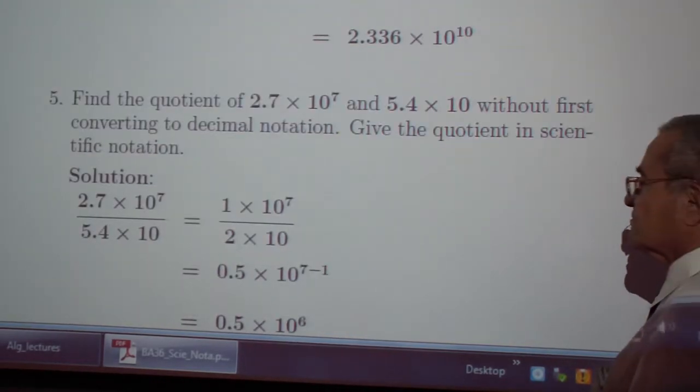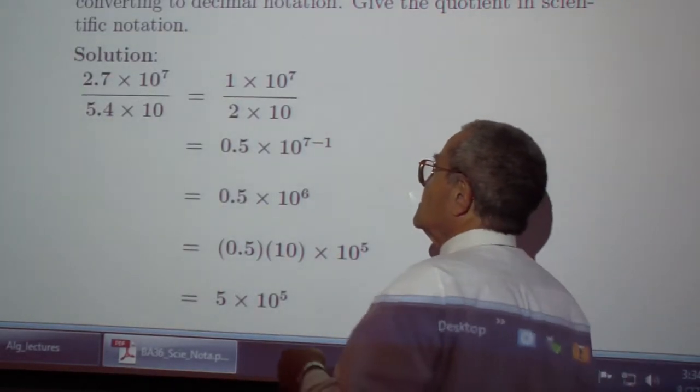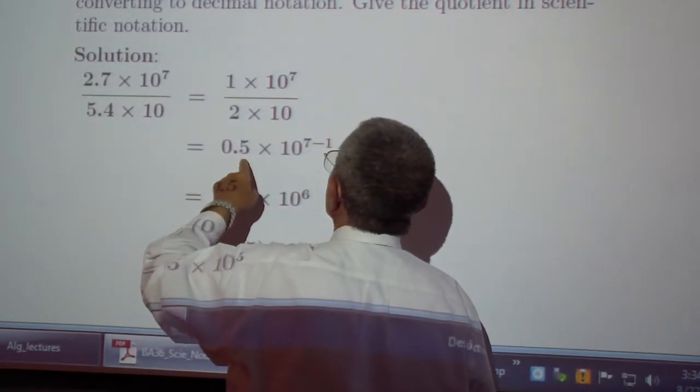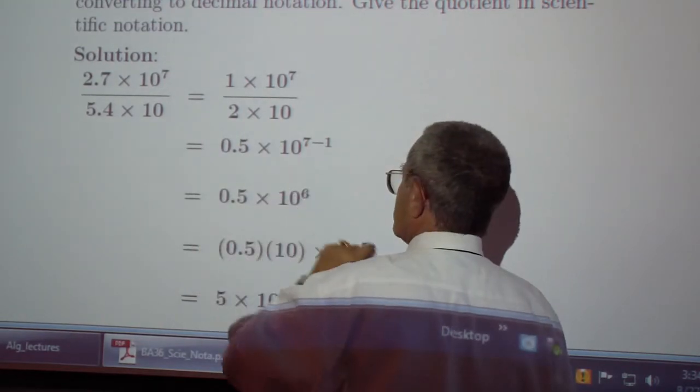The quotient. 2.7 over 5.4, that's 0.5. 10 to the 7 minus 1, 10 to the 6.